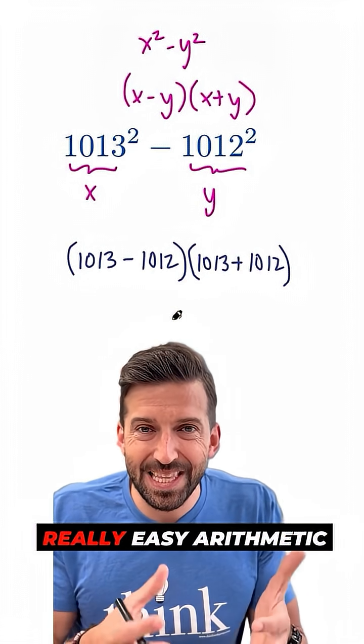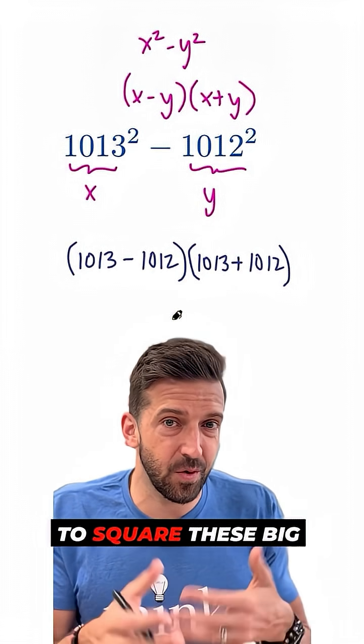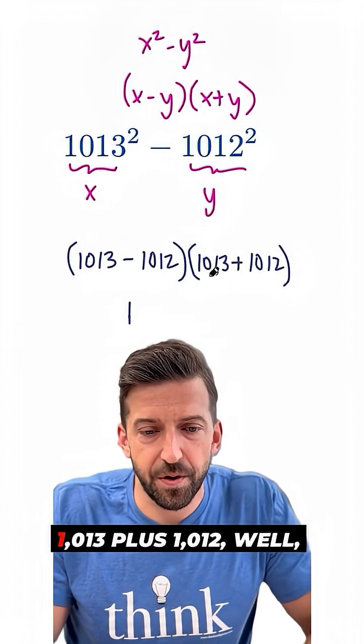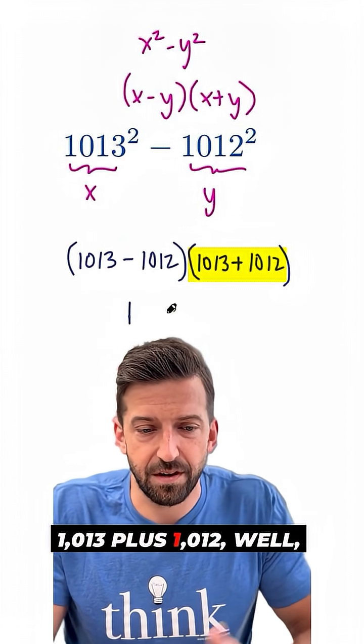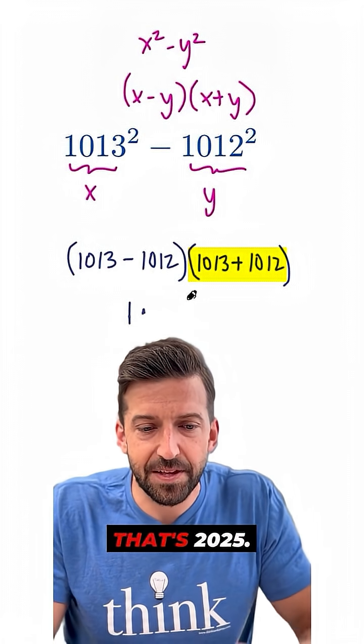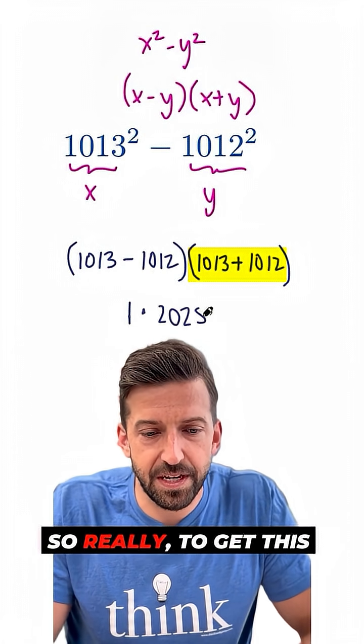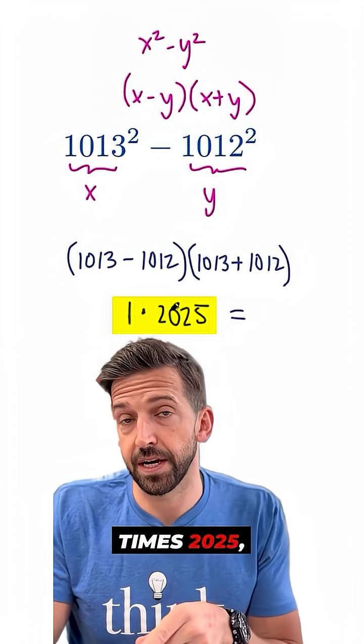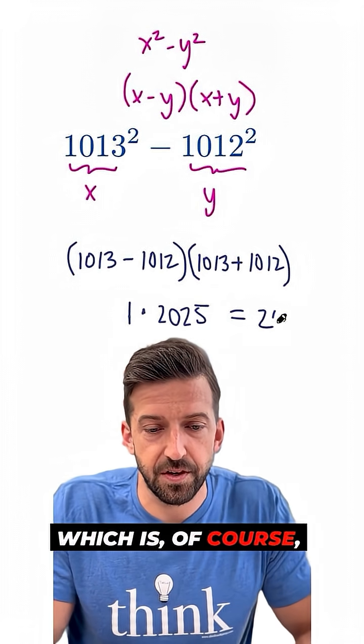Well, now I've got two really easy arithmetic problems to solve instead of having to square these big numbers. 1013 minus 1012, that's just one. 1013 plus 1012, well, that maybe takes a moment here, but that's 2025. So really to get this answer figured out, all I have to do is one times 2025, which is of course 2025.